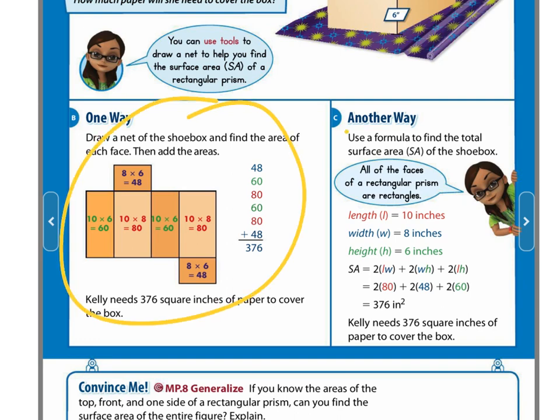Another way is to use a formula. The formula for surface area is we have to find the length, width, and height. So we would multiply two times the length times the width and add that to two times the width times the height, and add that to two times the length times the height. If we do all of those things, then we're taking care of each and every part of the net.